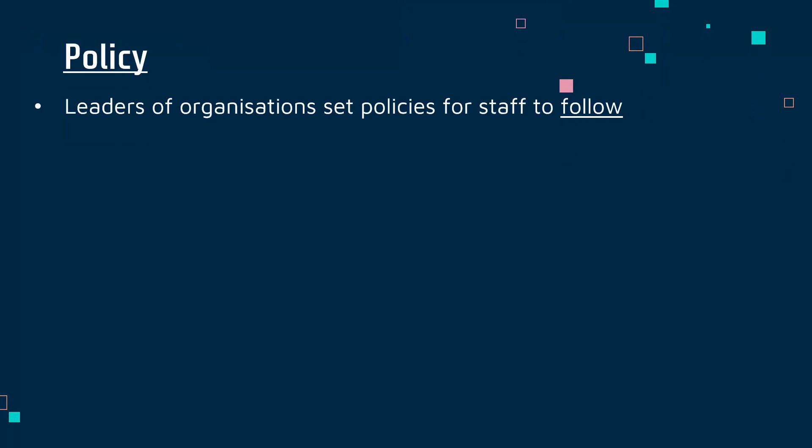A policy is a document set by leaders of different organisations, and they are setting these policies for all staff to follow, or for certain staff to follow in some cases. Really a policy is a document telling staff what they should be doing and what they shouldn't be doing. It's a key area of managing people — you have to have certain policies in writing which are easy for staff to follow and are clear to the staff.